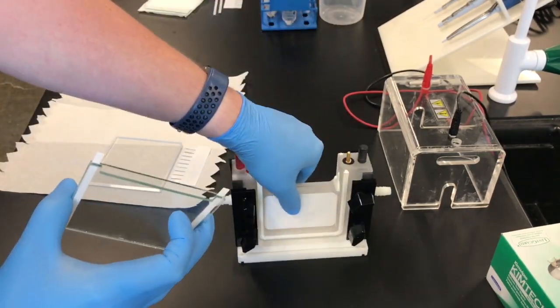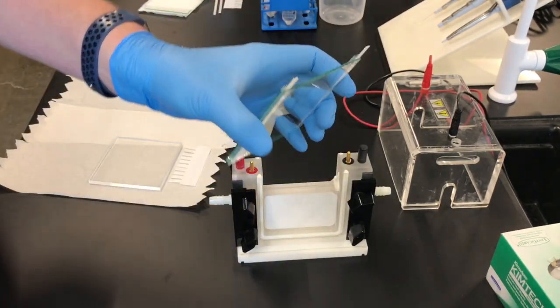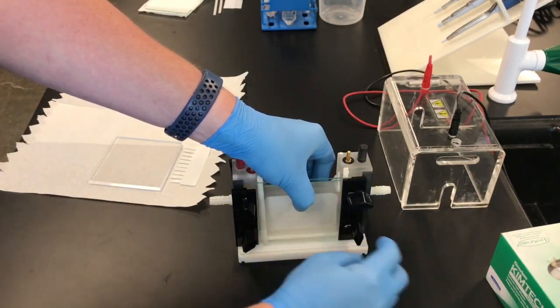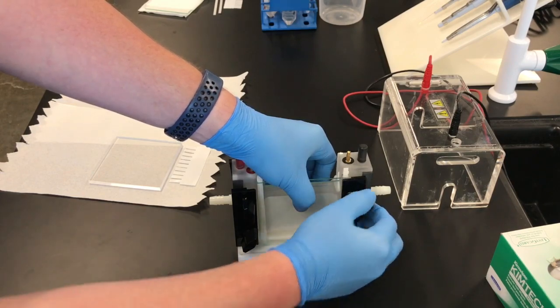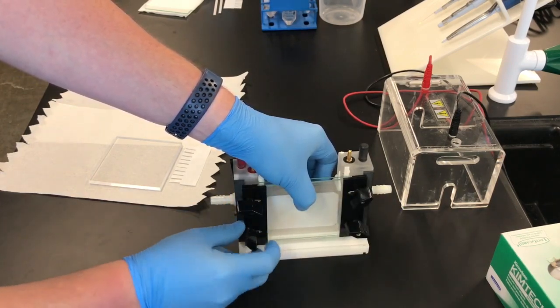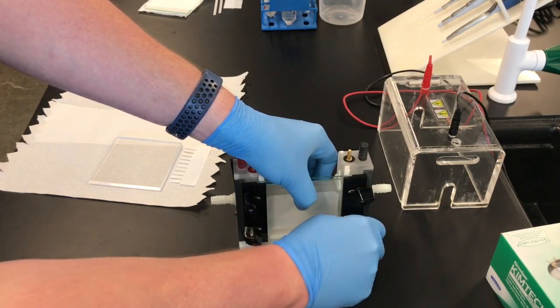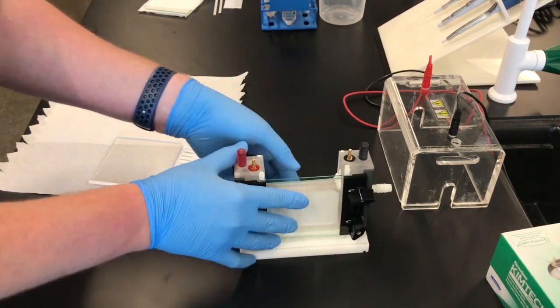We're then going to place it into the apparatus with the square glass plate facing outward and the notches facing inward. We can then tighten it using the clamps on each side. It just has to be finger tight, and make sure to go around and check that everything is tight.